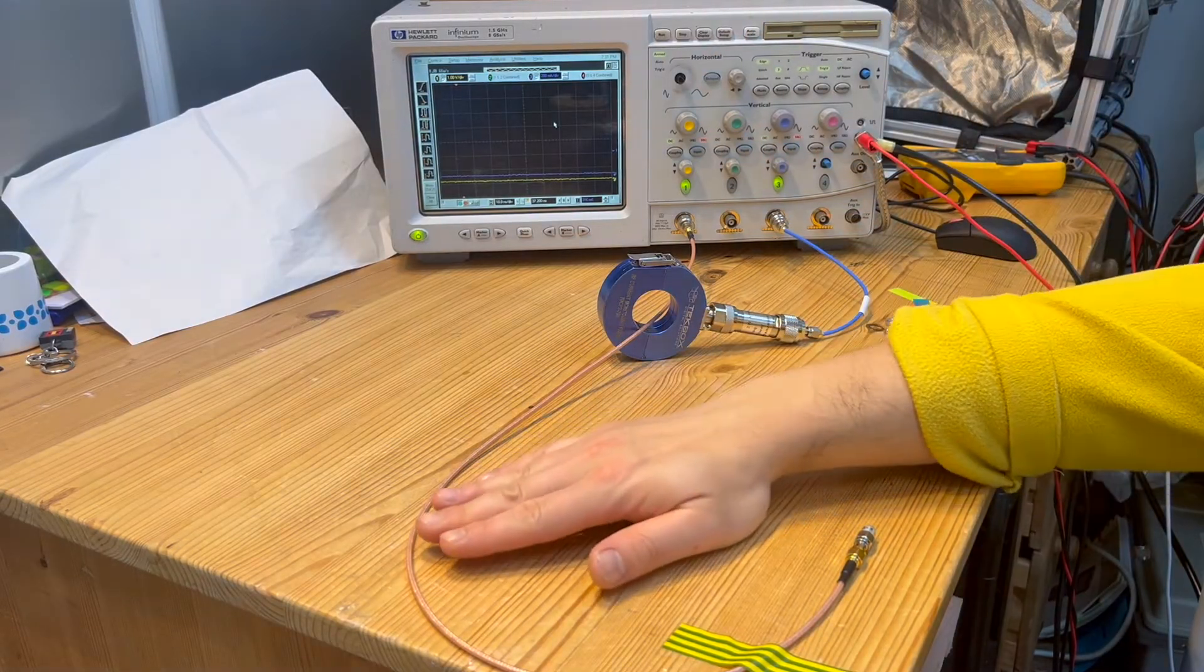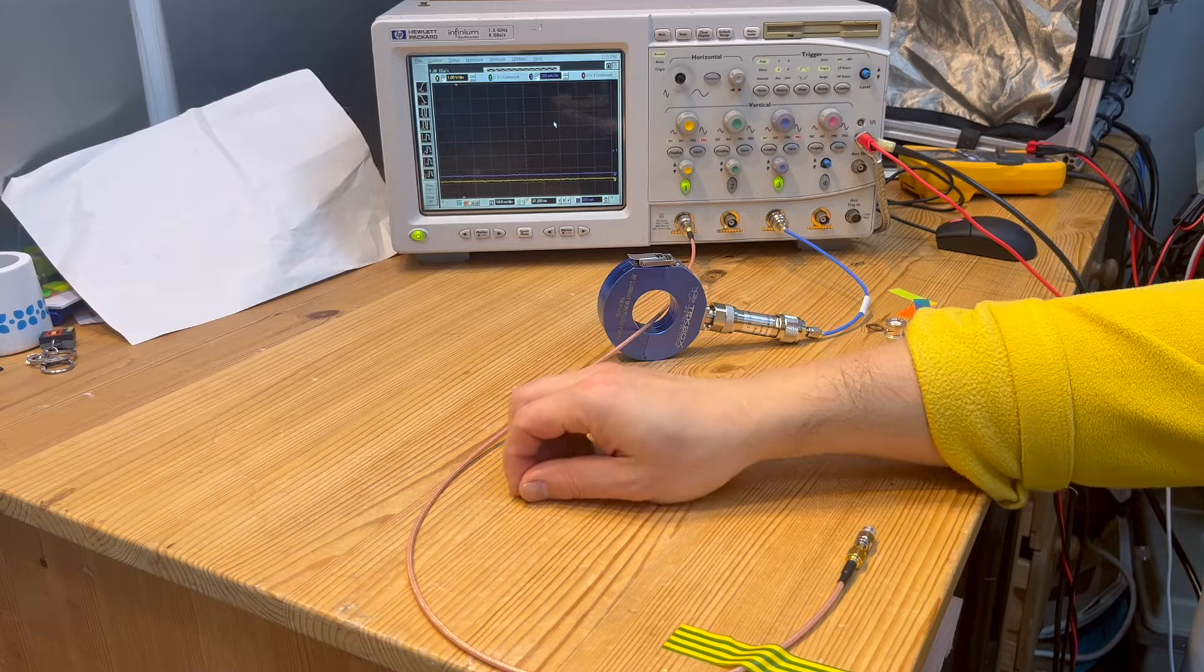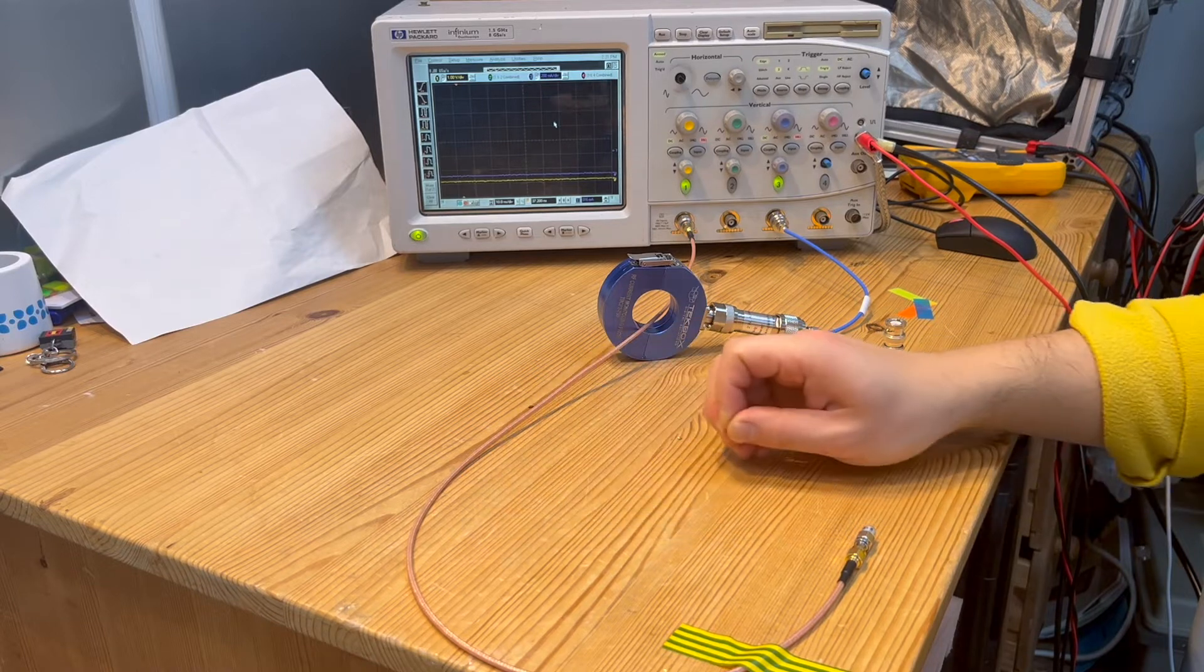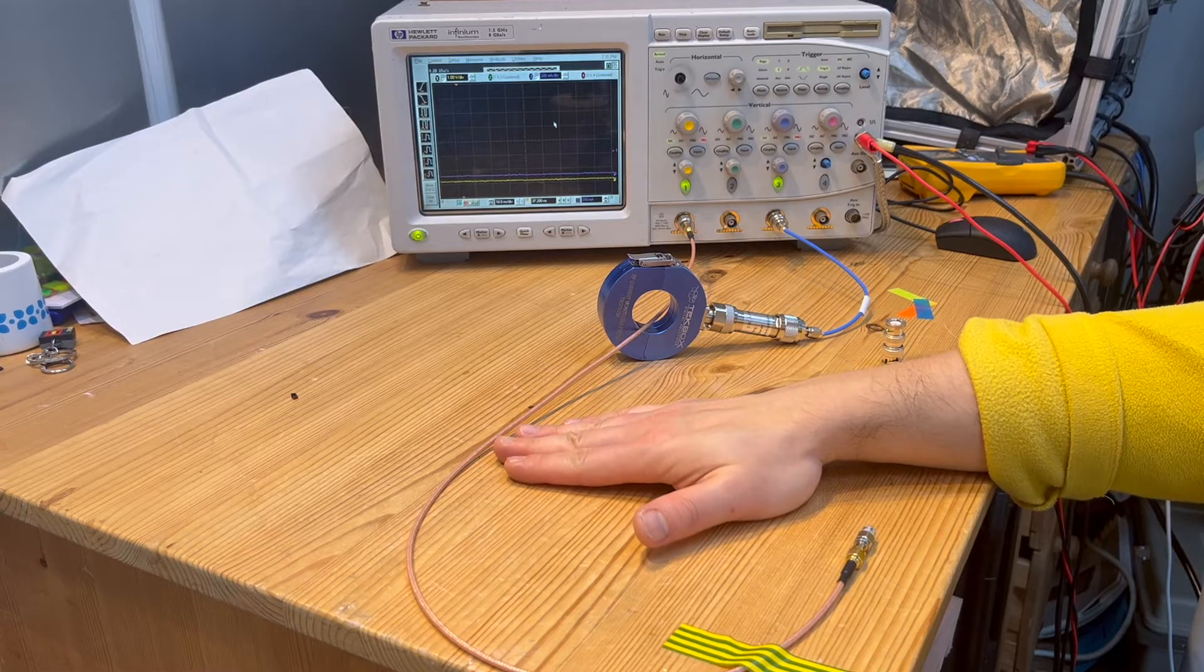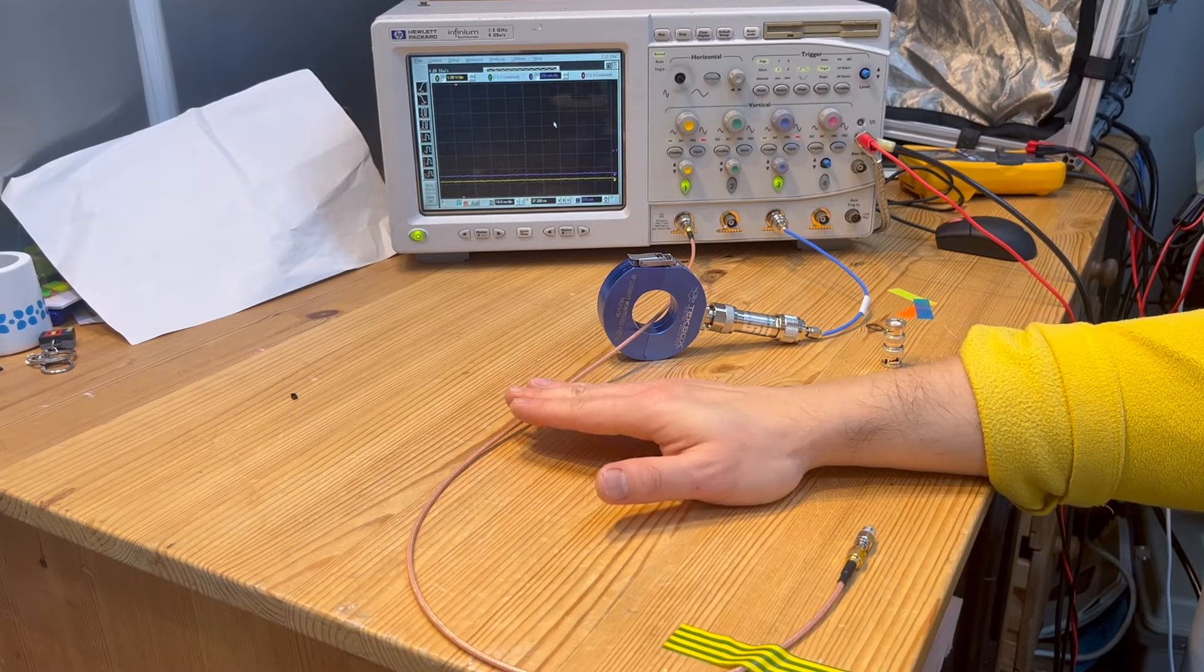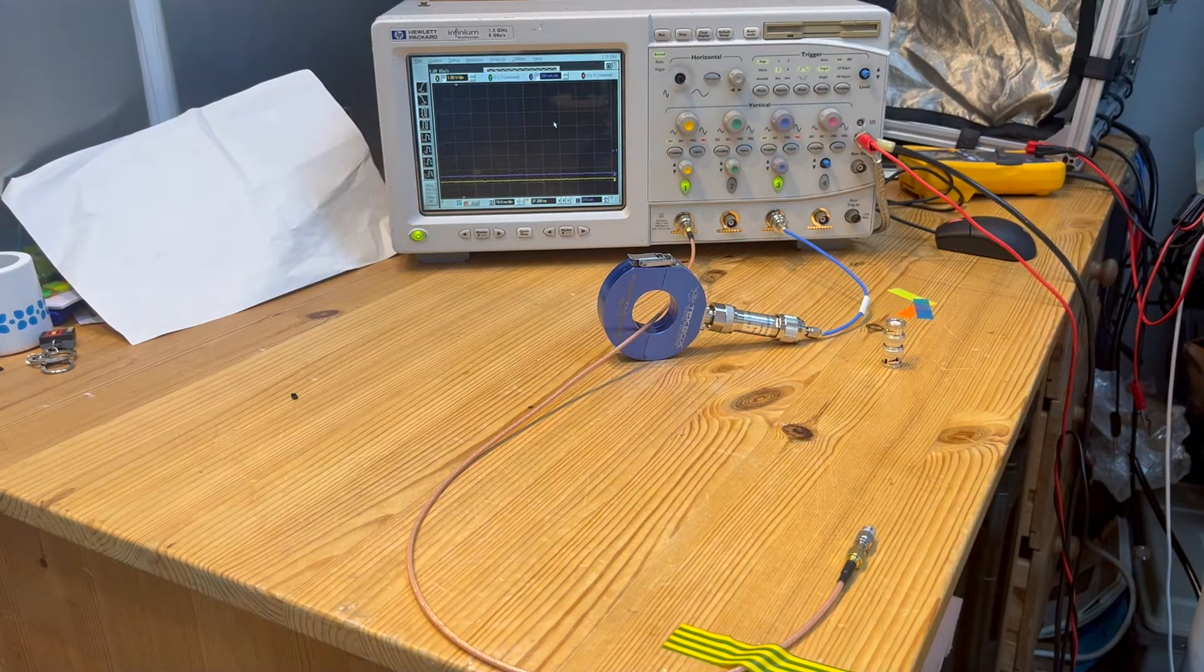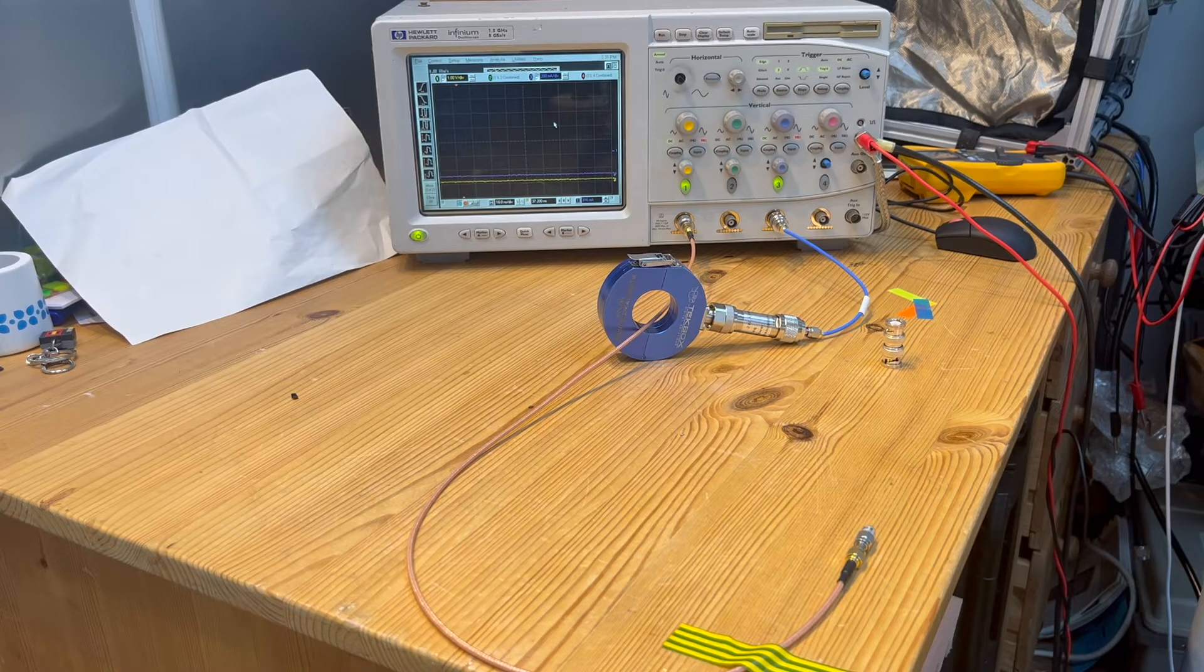If you see a significantly high voltage induced in channel 1, that indicates a poor shielding effectiveness of a coaxial cable. But if you only see a very small induced voltage in channel 1, then that means your coaxial cable has a really good shielding effectiveness.